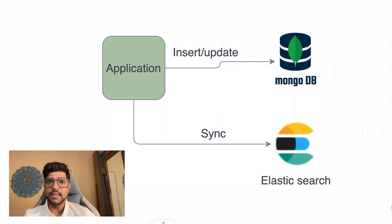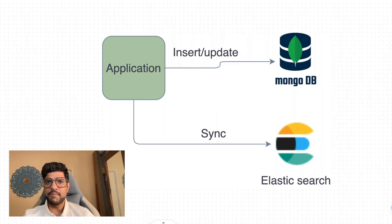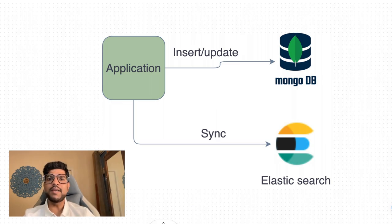If we are updating the data from the application, there can be two scenarios. First, if we are updating MongoDB first and then updating Elastic, we may have data out of sync because these are sequential processes. If we want to have the data updated in real time, we can have parallel processing in which MongoDB as well as Elastic are updated at the same time. But the problem is if MongoDB is getting updated and the Elastic update is failing, or the other way around, in both scenarios we might have out-of-sync data.